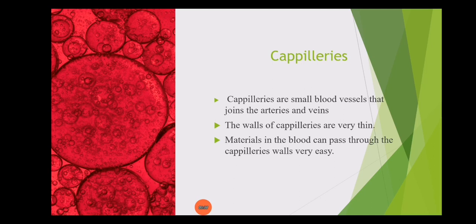Here we have the capillaries. In the previous slide you saw a diagram in which in the center we have a cluster called capillaries. Capillaries are basically small blood vessels that join the arteries and the veins. Capillaries ki jo wall hoti hai wo bohot zyada thin hoti hai, and the material in the blood can pass through the capillary walls very easily.